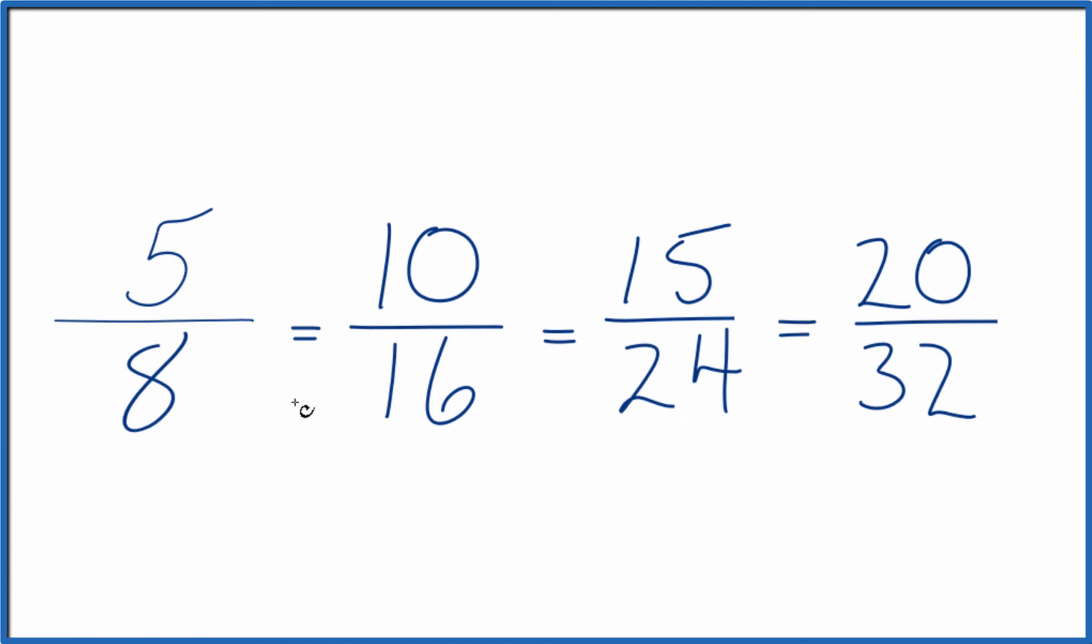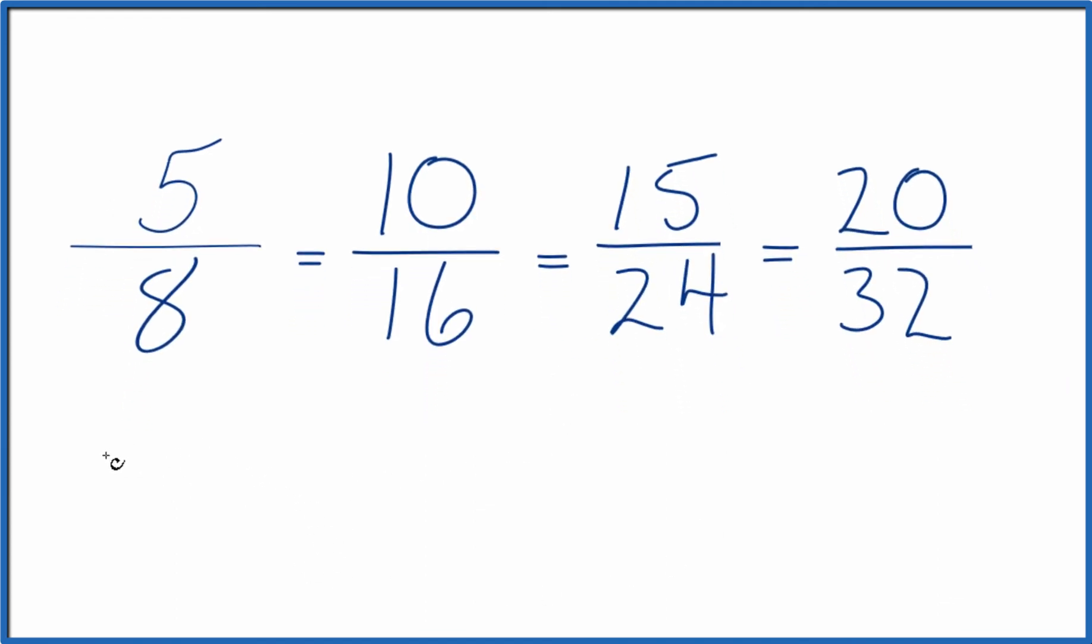These are equivalent. We could write the ratios like this, 5 to 8, and then 10 to 16, and so on. So that's how you write equivalent ratios for 5 eighths. This is Dr. B, and thanks for watching.